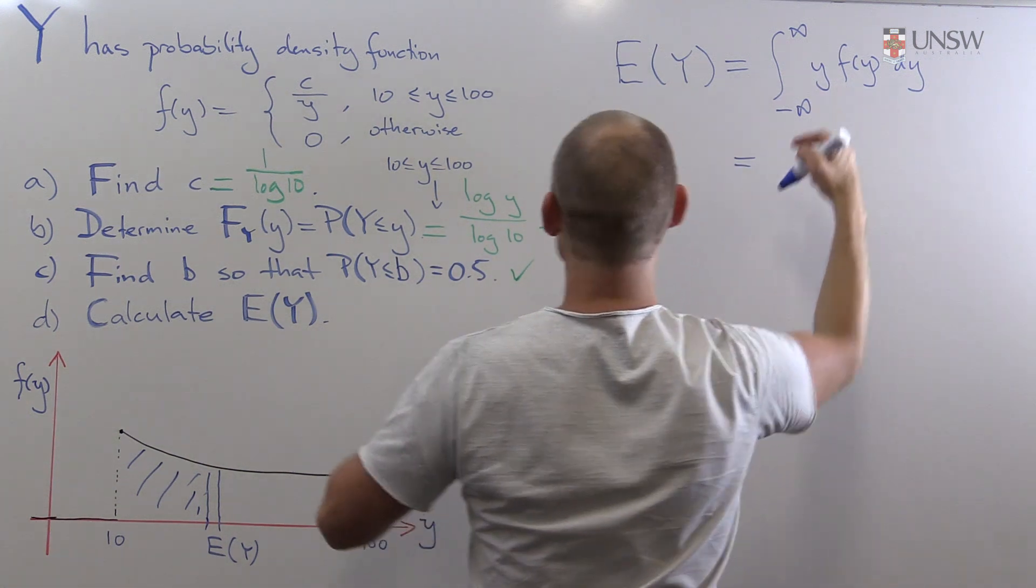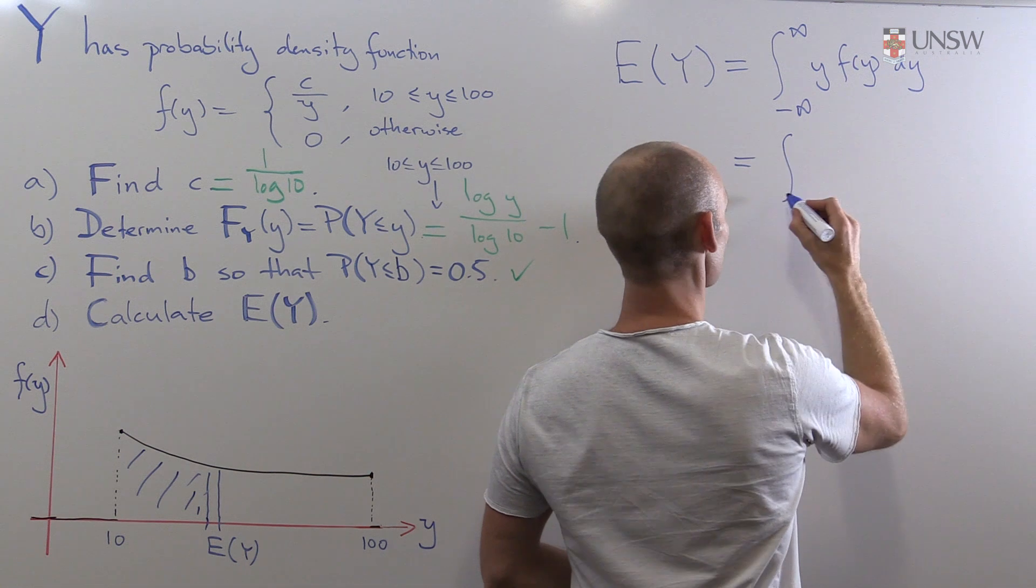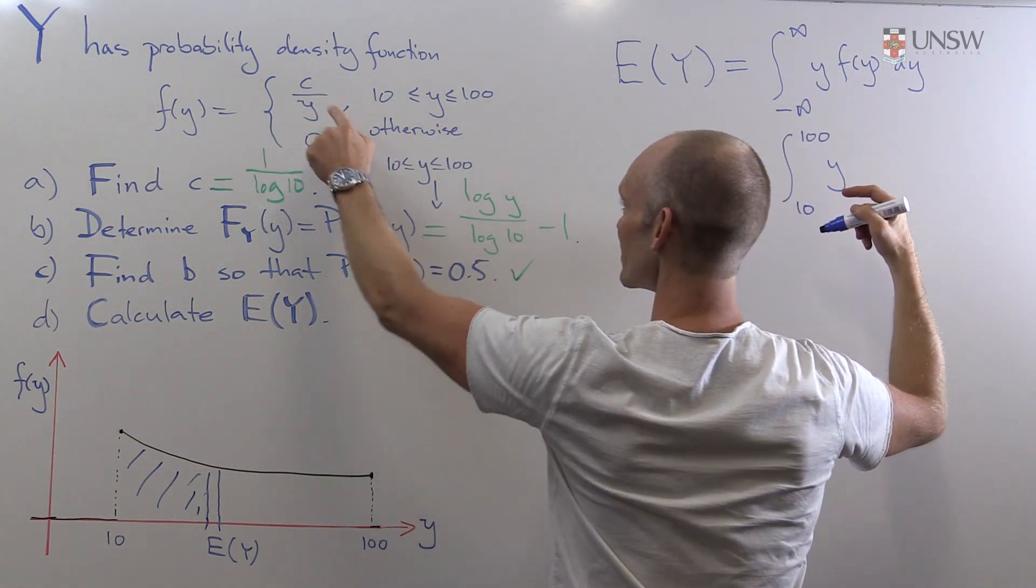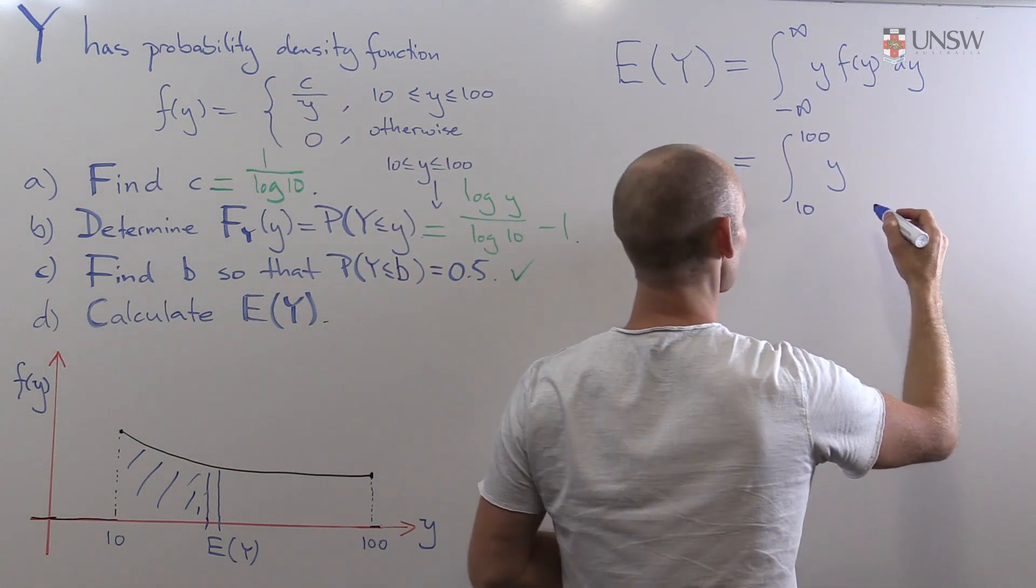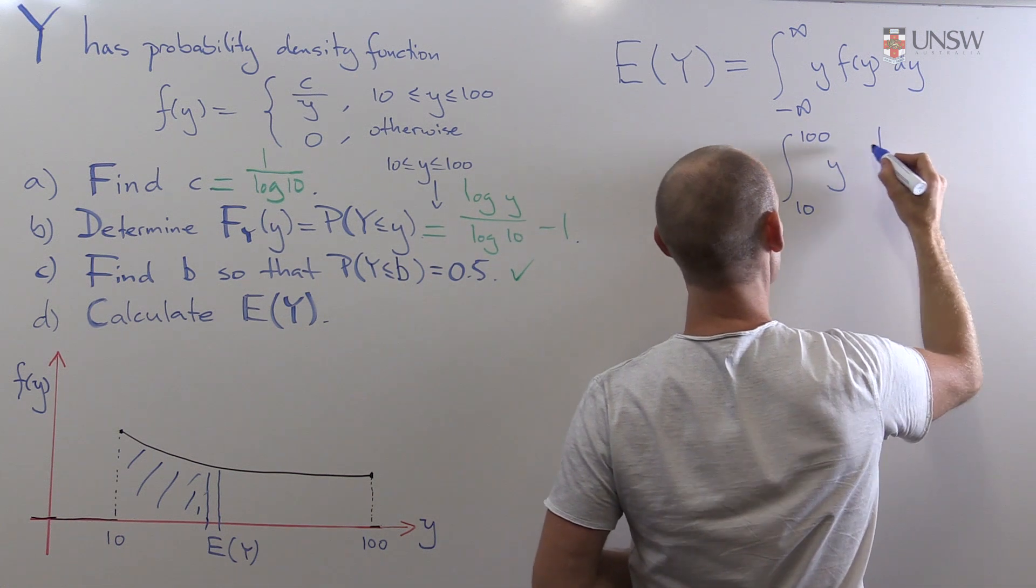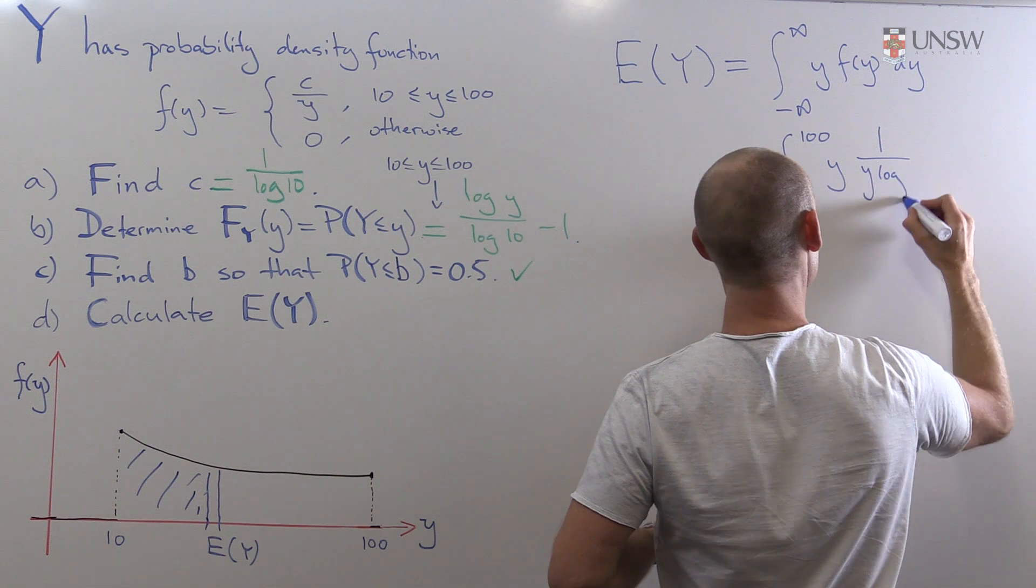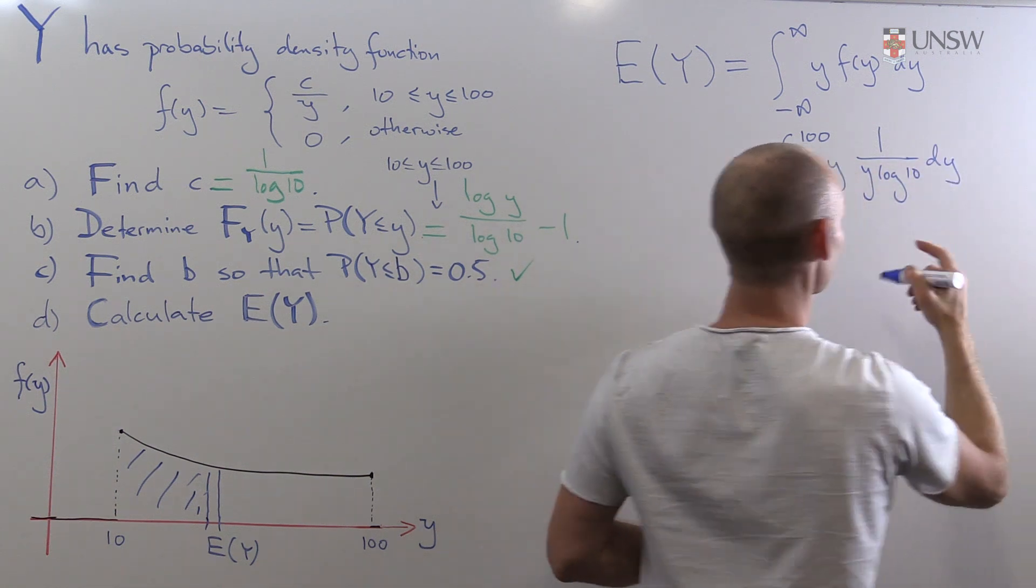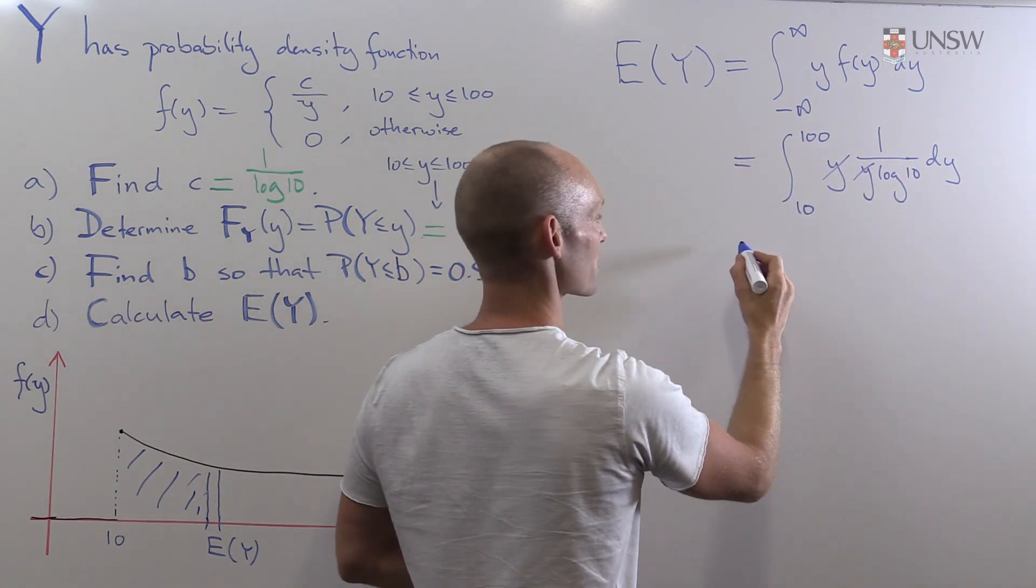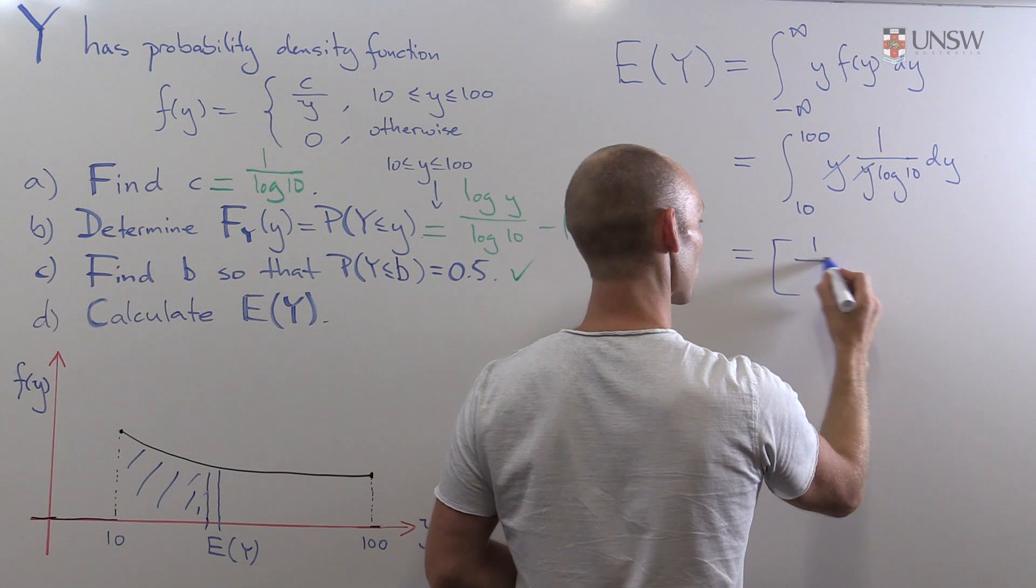So we have the density function being 0 everywhere except in the interval from 10 to 100. So we just have to concentrate on this interval here. And we have y. Within that interval we've got c over y. c was 1 over log 10. So we've got 1 over y log 10 dy. Ah, this is nice because you see that these two y's cancelled out, leaving us just the constant 1 over log 10.